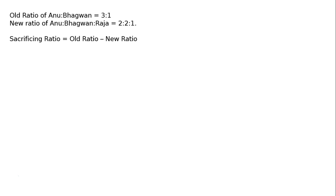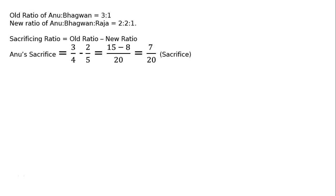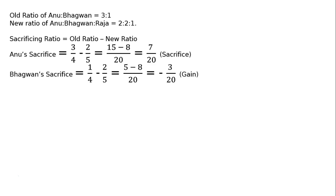Sacrificing ratio equals old ratio minus new ratio. Anu's sacrifice equals 3/4 minus 2/5. Taking LCM 20: 15/20 minus 8/20 equals 7/20 — that is Anu's sacrifice. Bhagwan's sacrifice equals 1/4 minus 2/5. Taking LCM 20: 5/20 minus 8/20 equals minus 3/20 — that is a gain for Bhagwan.